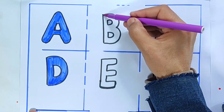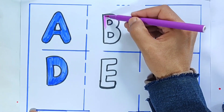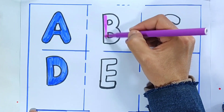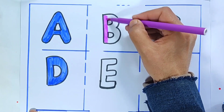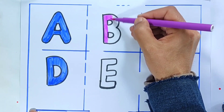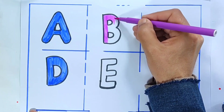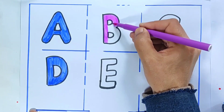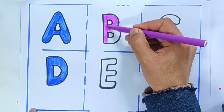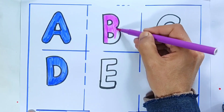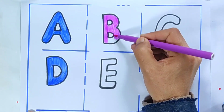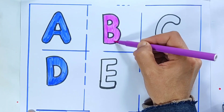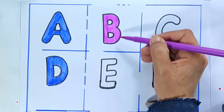Purple color, letter B. B is for baby. B is for banana. Letter B. B is for banana. B is for baby.